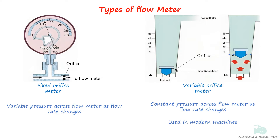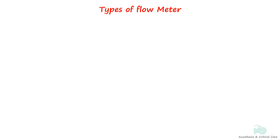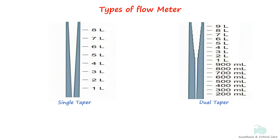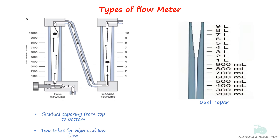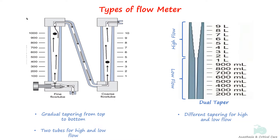Variable orifice flow meters, synonymously known as rotometers, are the type used in modern machines. They are glass tubes with a slightly smaller cross-section at the bottom than the top. They are designed as single or dual taper for anesthesia machines. Single taper have a gradual increase in diameter from bottom to top and are used when there are different tubes for high and low flows. Dual taper have two different tapers inside the same tube, increasing gradually up to 1 liter per minute for low flow and more rapidly above 1 liter per minute for high flow, so one dual taper tube can be used for both.